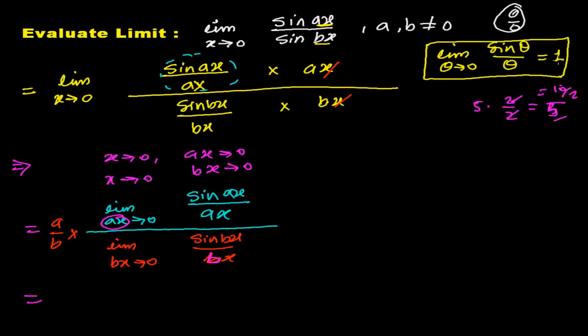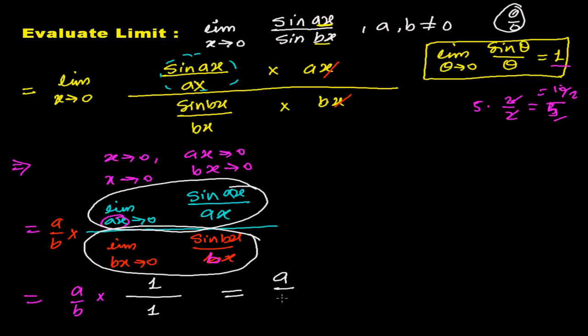Now, I already told you, this is equals to 1. So, let me first write a over b. And here, this whole part will be 1. And then, this denominator part also will be 1. And finally, we're getting the value a over b. That's our answer.